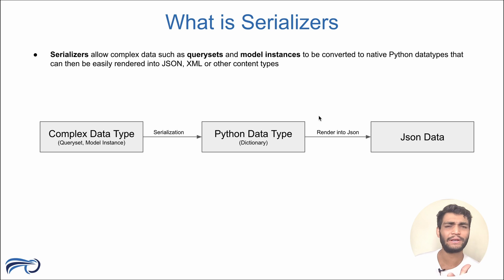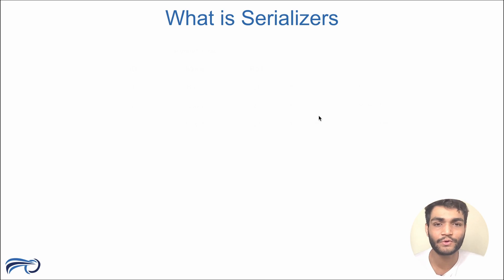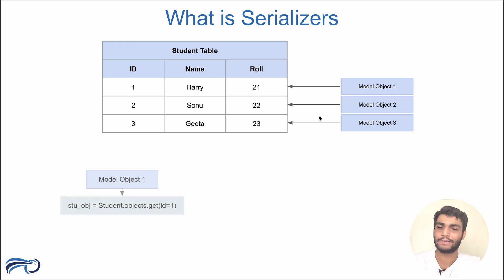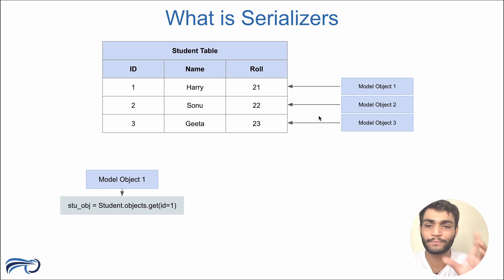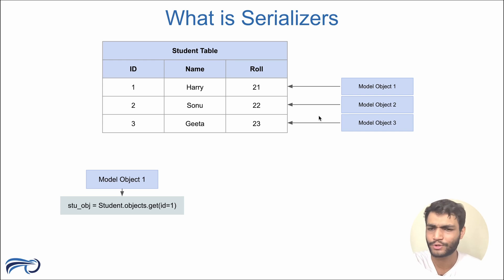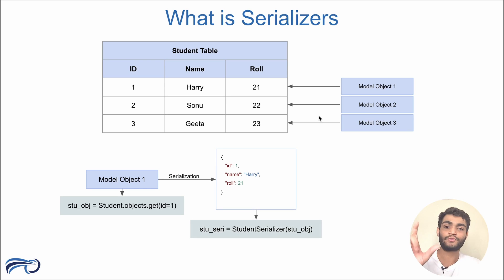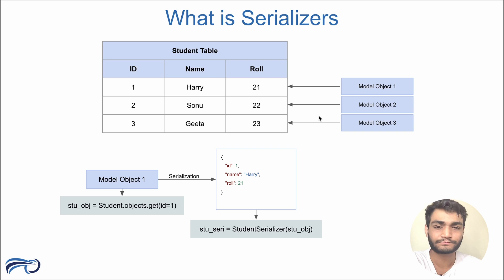Now that you have a fair idea, let's understand this with an actual example. Let's say you have a Student table with three columns: id, name, and role, and we have three entries in it. To fetch one entry in Django, we use the ORM and write Student.objects.get(id=1) and store it in a student_object variable. Then we use the serializer to convert this model object into dictionary format. We create a StudentSerializer and pass the model object into it — how to make this StudentSerializer we'll see in the coding part.